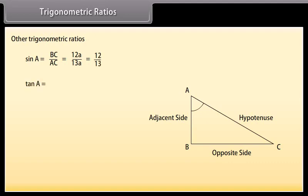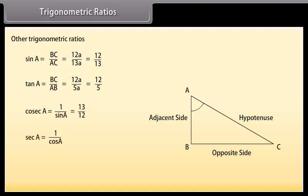Let us now find the values of the other trigonometric ratios. Sin A equals BC upon AC, equals 12a upon 13a, equals 12 upon 13. Tan A equals BC upon AB, equals 12a upon 5a, equals 12 upon 5. Cosec A equals 1 upon sin A, equals 13 upon 12. Sec A equals 1 upon cos A, equals 13 upon 5. Cot A equals 1 upon tan A, equals 5 upon 12.